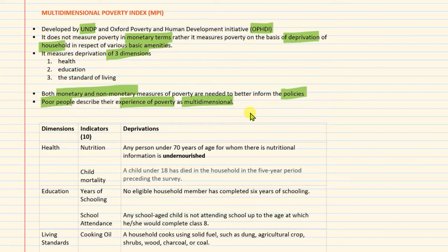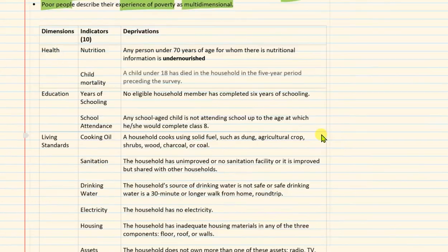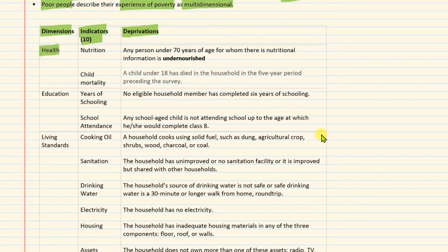This is exactly what is done by the Multidimensional Poverty Index developed by UNDP and OPHDI. MPI measures three dimensions by using 10 indicators, and for these indicators, deprivations are identified. Let us look at the first dimension: health. The two indicators used for health are nutrition and child mortality.